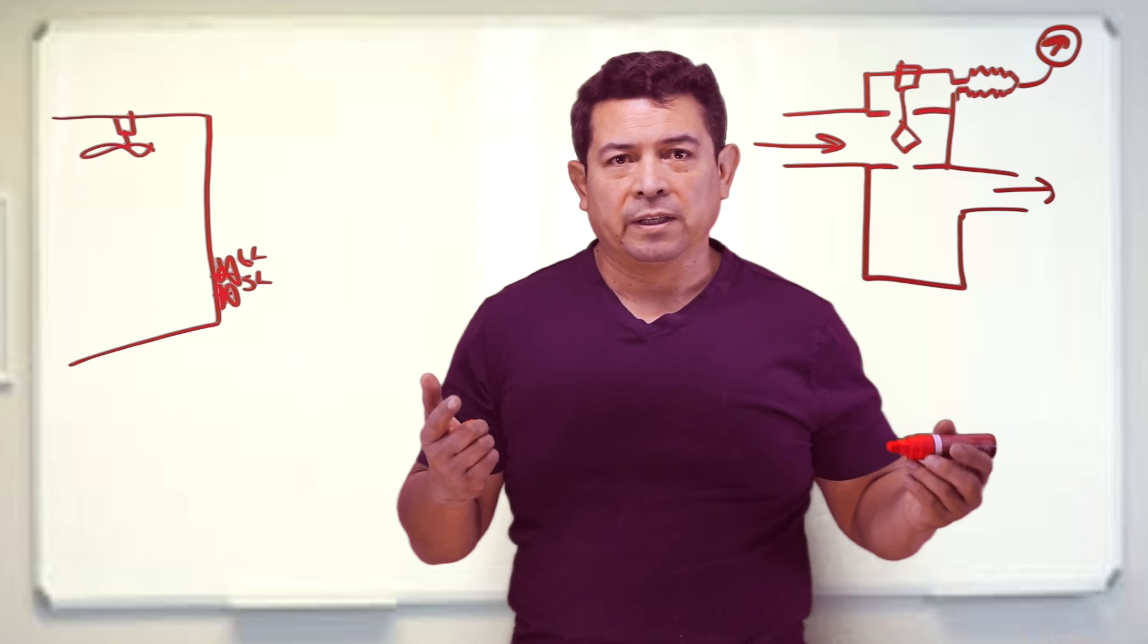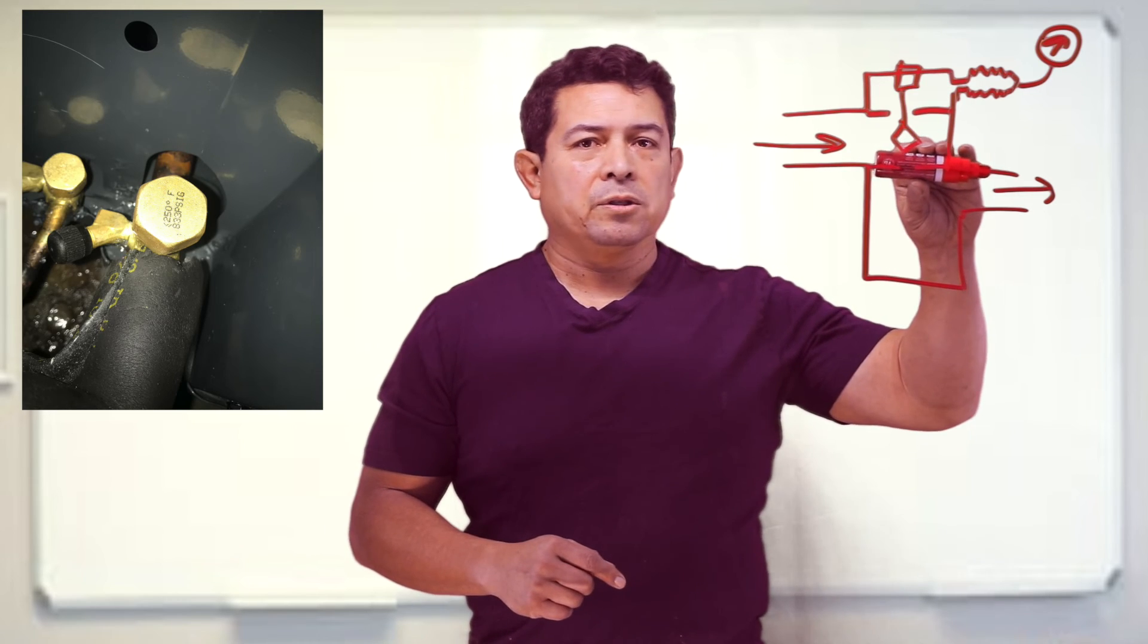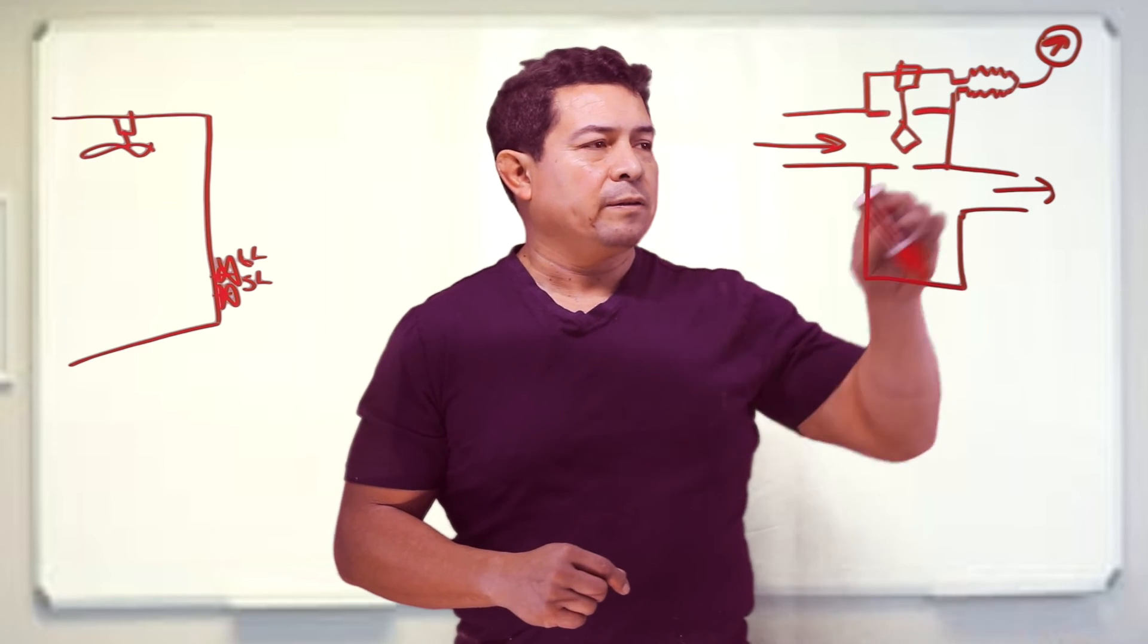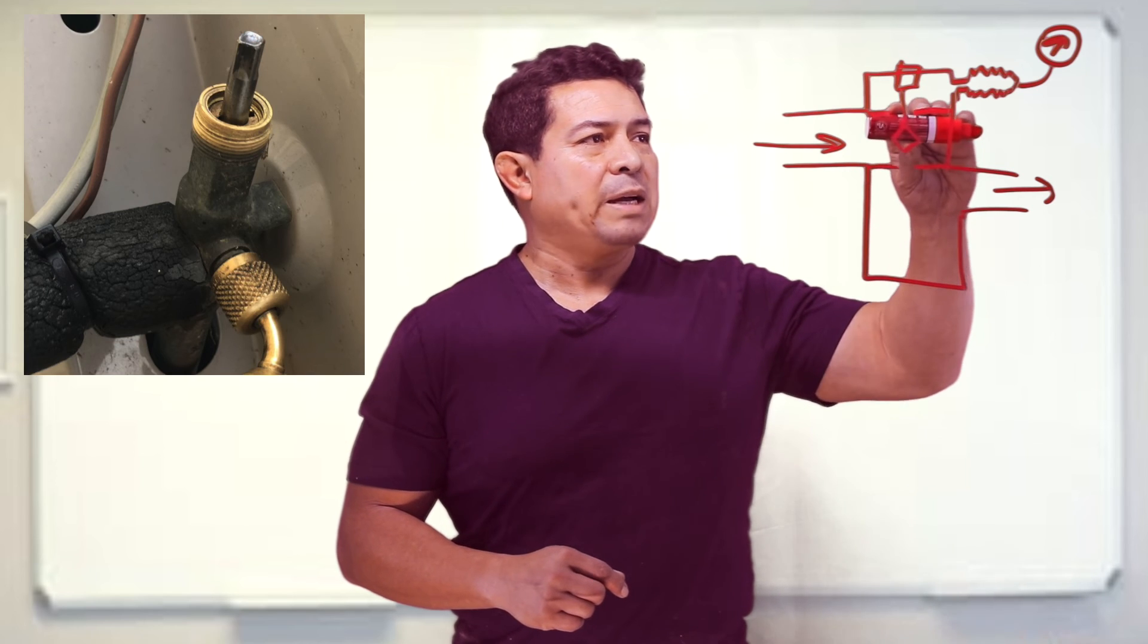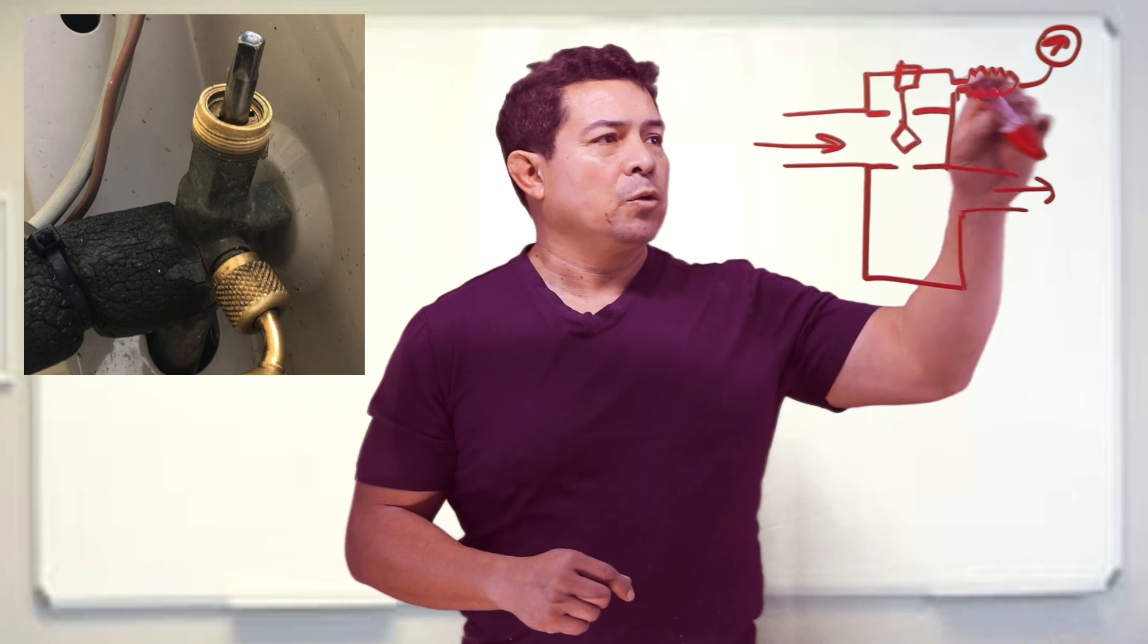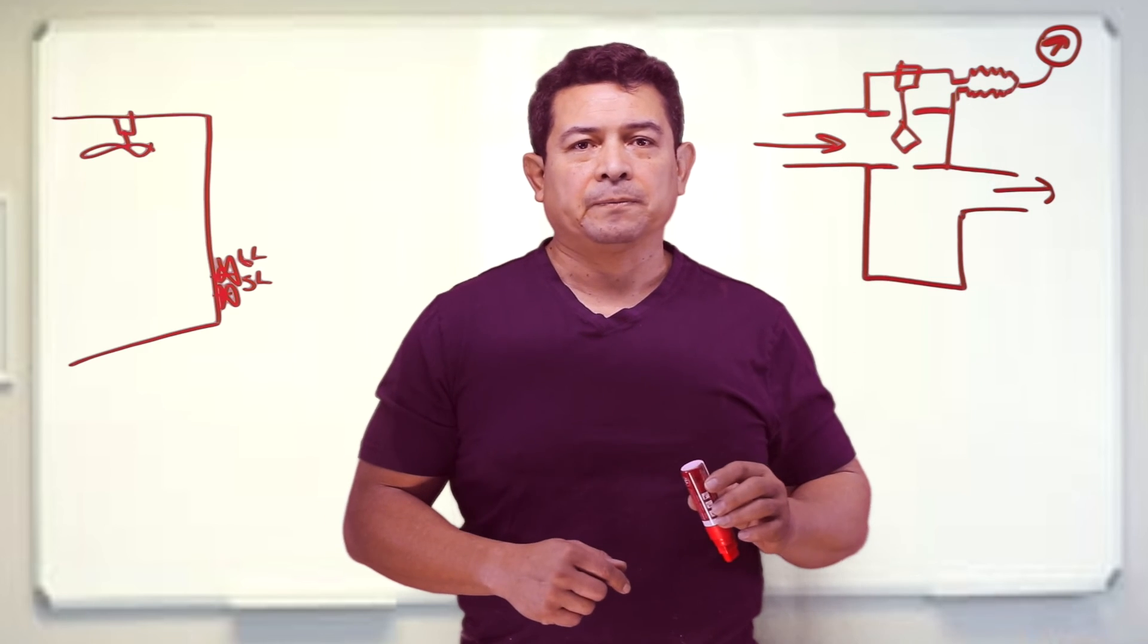So now you have the two different kinds: the one that has only two positions, fully closed or fully open, and then you have this kind that has the three position, front seated, back seated, and then throttled or mid position so we can add refrigerant, we can take pressure readings and service the system.